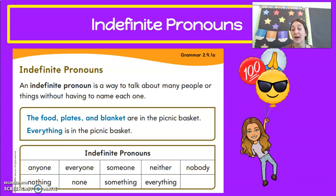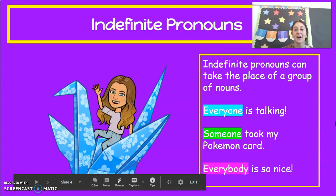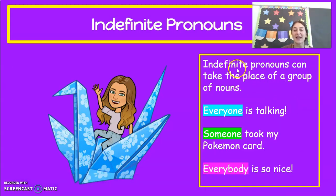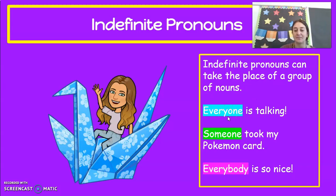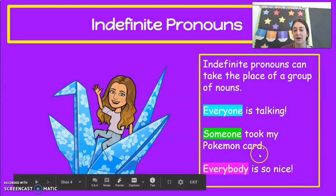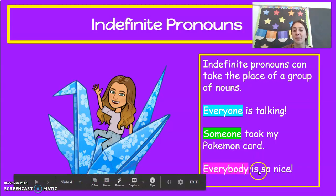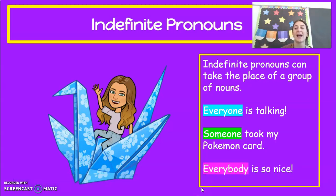Our last two do have something in common: something, everything — they both end with the word 'thing.' So here are some indefinite pronoun sentences. Indefinite pronouns can take the place of a group of nouns. We could say 'everyone is talking' — everyone is our indefinite pronoun. 'Someone took my Pokemon card' — you don't know who that someone is; it could be anyone in the class. 'Everybody is so nice' — we're talking about a big group of people, so we say everybody.